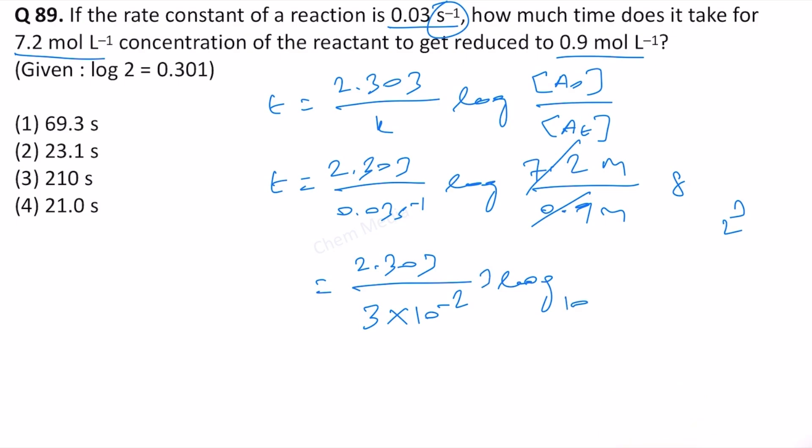So therefore, this is simply log 2. This 3 we can cancel. Log 2 value is given as 0.301. Therefore, this is 2.303 times 30.1 because when this 10 to the power minus 2 comes up, it will become 100.